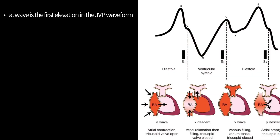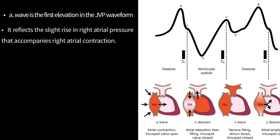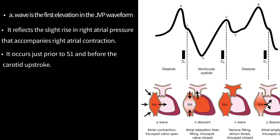The A-wave is the first elevation in the JVP waveform and reflects the slight rise in right atrial pressure that accompanies right atrial contraction. It occurs just prior to S1 and before the carotid upstroke.